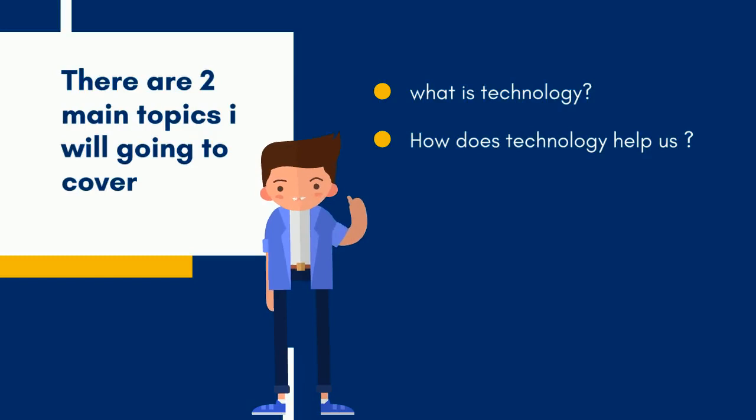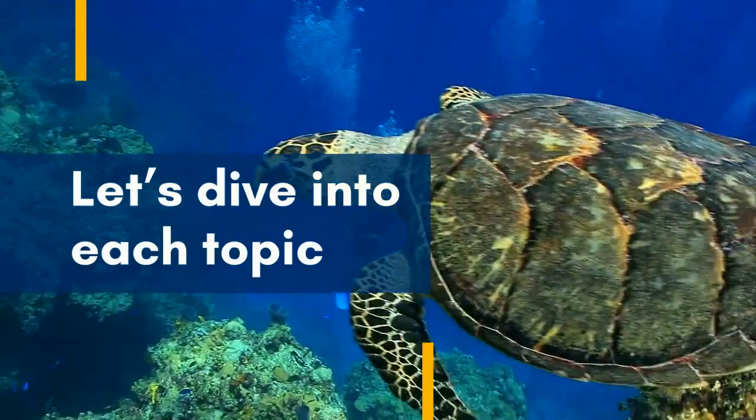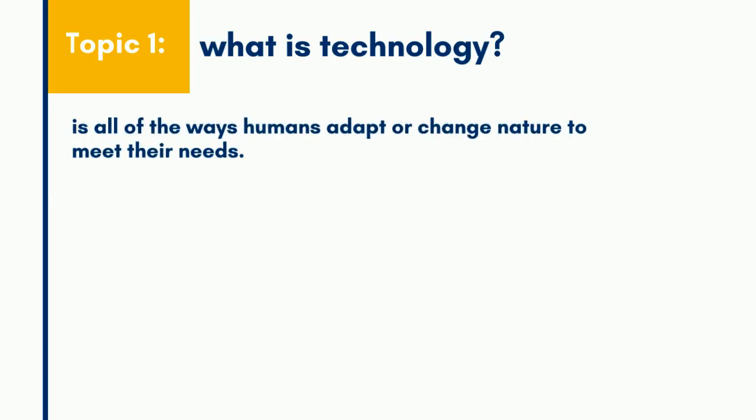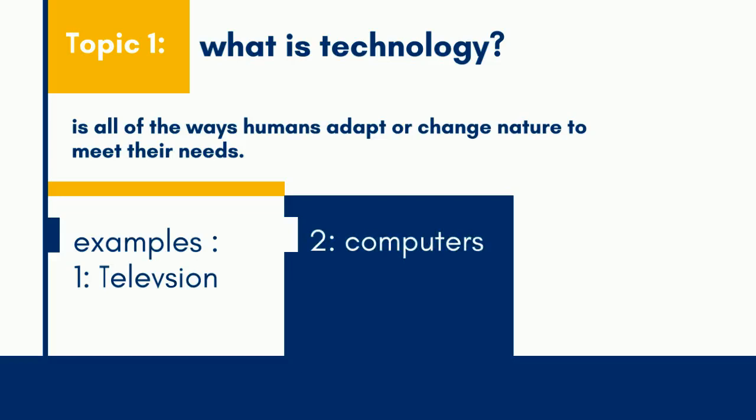Let's dive into each topic. Ready, go! What is technology? It is all of the products and inventions made by people. It's all of the ways humans adapt or change nature to meet their needs. Examples: television, computer, microscope.